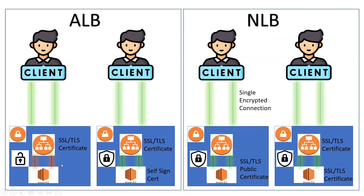So this is one connection from client to our ALB and here is the second connection. There are two connections established with layer 7 ELB. This is the first scenario we have discussed.